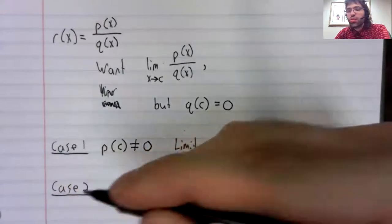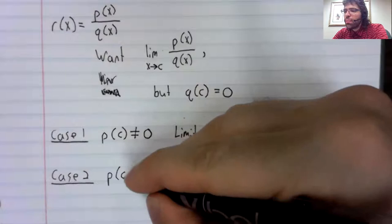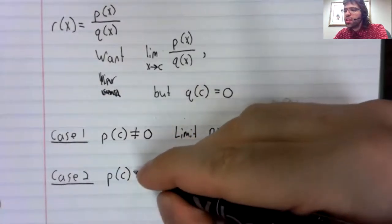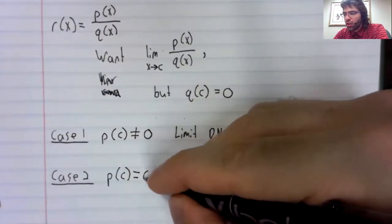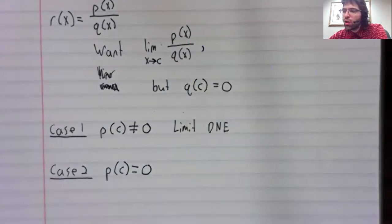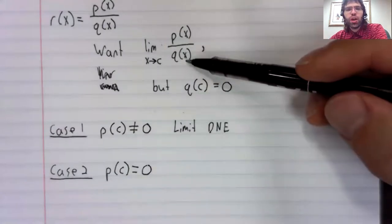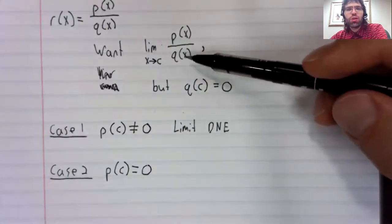Case two, suppose that p of c also equals zero. So, at c, the numerator and the denominator are both zero.